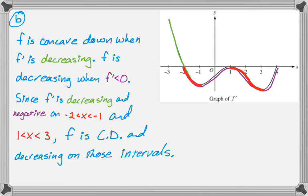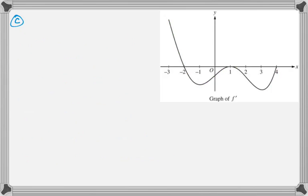So part c is telling us to find the x-coordinates of the points of inflection of the graph. If you read the problem stem, it tells you that f' has horizontal tangent lines at x equals negative 1, x equals 1, x equals 3. That's important for this question because I'm going to put dots on each of the relative extrema of f' because those correspond to the points of inflection of f.